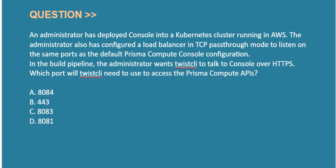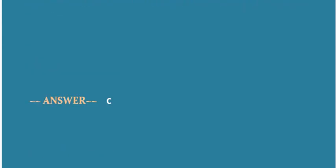Which port will TwistCLI need to use to access the Prisma Compute APIs? Option A: 8084. Option B: 443. Option C: 8083. Option D: 8081. Correct answer is Option C.